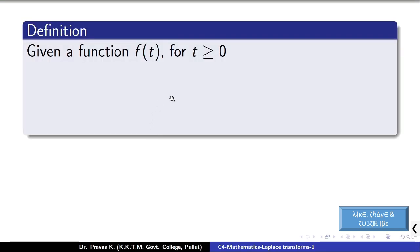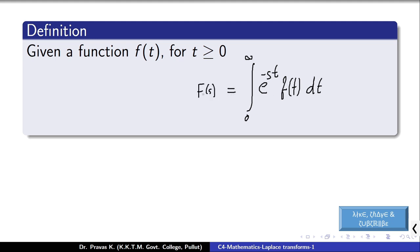First, let us see the basic definition of Laplace transform. Given a function f(t) for t greater than or equal to 0, we define the integral from 0 to infinity of e raised to minus st times f(t) dt. After evaluating this integral, it becomes a function in s, so we denote it as capital F(s). The transformation from f(t) to F(s) is denoted by script L and is called the Laplace transform.